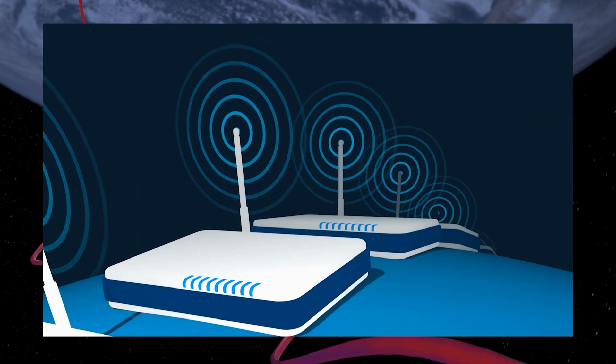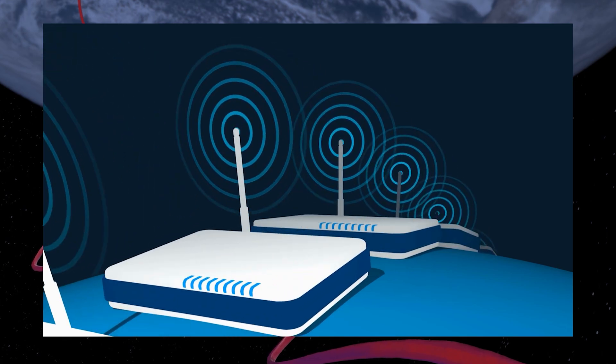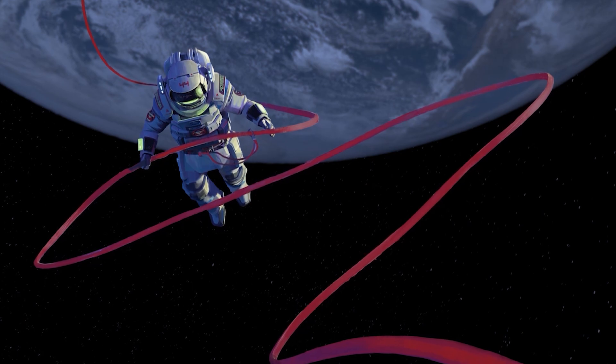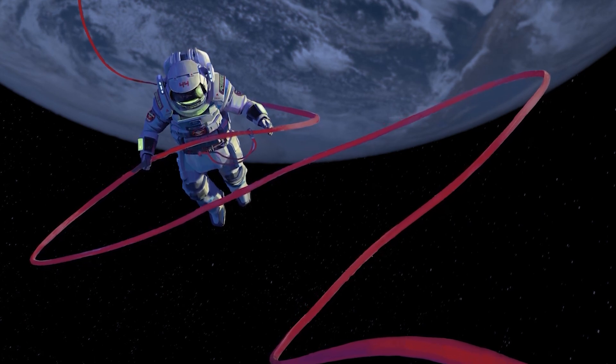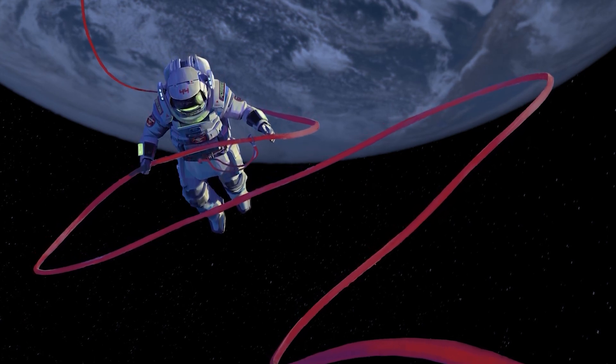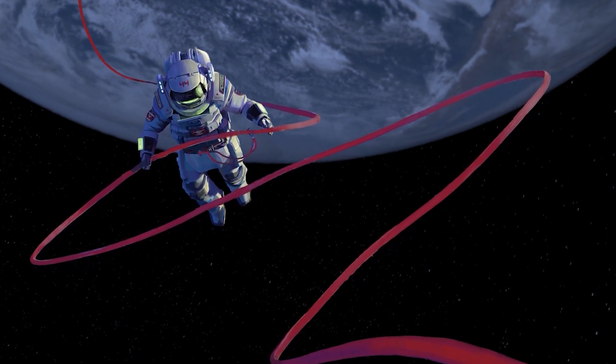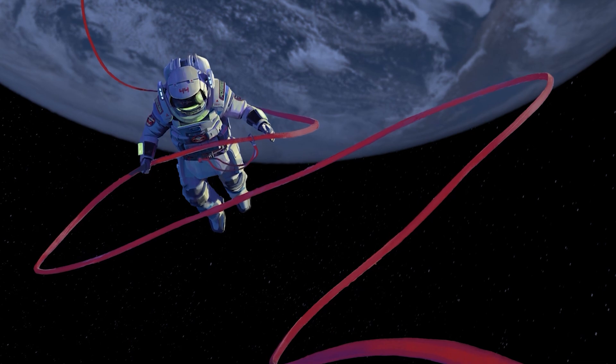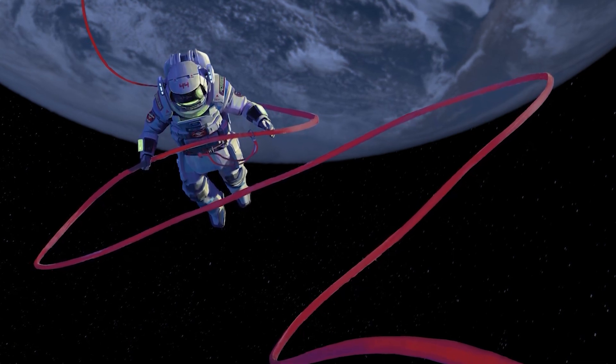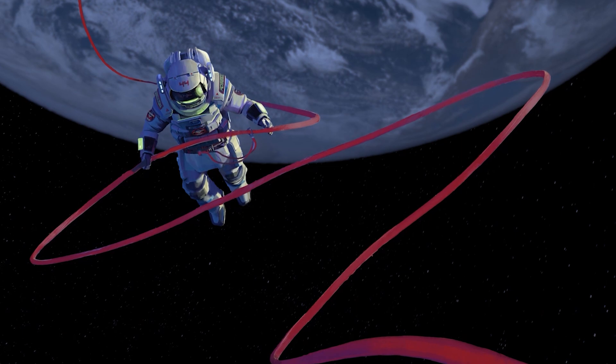Restart your router. A router reboot can clear out any network related issues that might be causing the authentication field error. Simply unplug the power cable from your router, wait for about 10 seconds, and then plug it back in. Give it a few moments to fully restart and reconnect to the internet. Once it's ready, launch Roblox and see if the error persists.